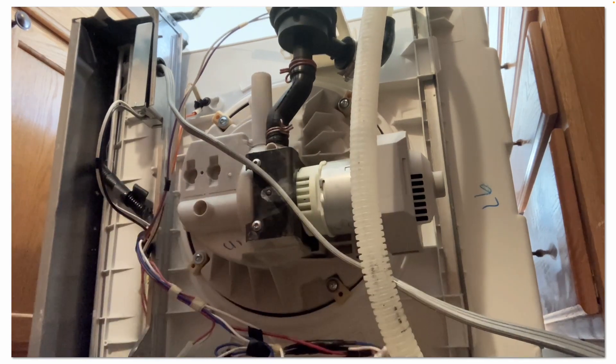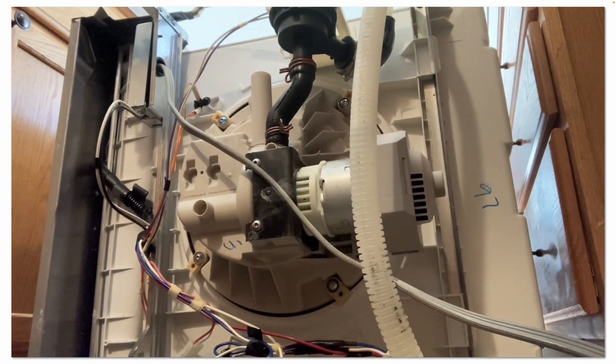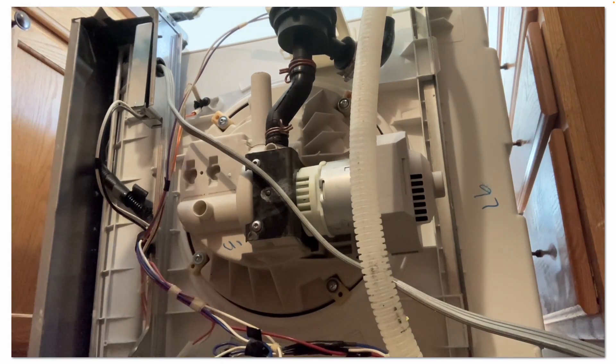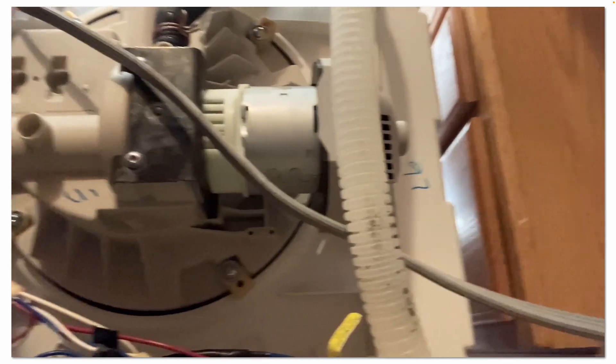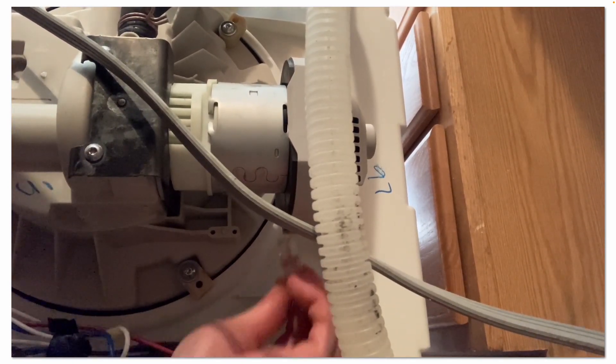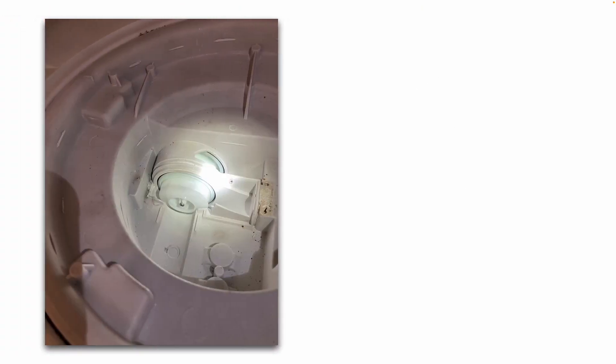Simply reattach your power cable there, plug that back in, plug it up into there, and then turn the dishwasher right side up again and open the door.